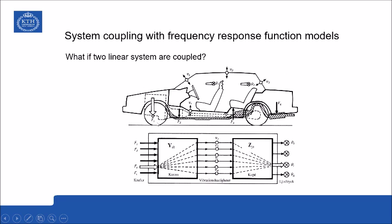The first system couples the external excitation forces — from wheel-road coupling and driveline car body contact — to the vibration velocities observed on the internal surfaces in the car cabin. The second system couples the vibration velocities on those surfaces to the sound pressure measured at the ear positions of the driver and passengers.